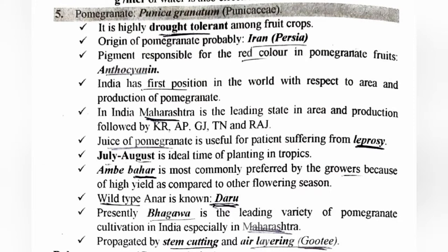Pomegranate's origin is Iran, that is Persia. The pigment responsible for its red color is anthocyanin. India is in first position with respect to both area and production of pomegranate. In India, Maharashtra is the leading state, followed by Karnataka, Andhra Pradesh, Gujarat, Tamil Nadu, and Rajasthan.